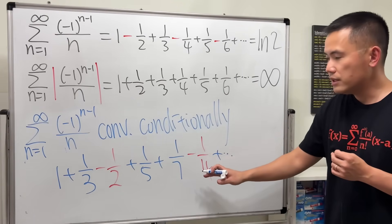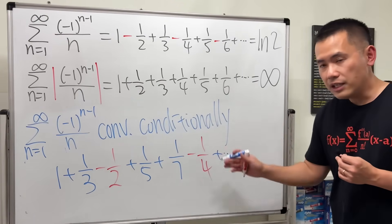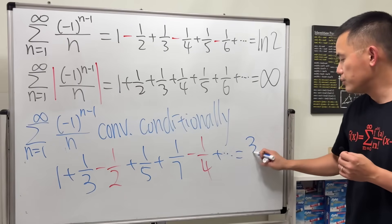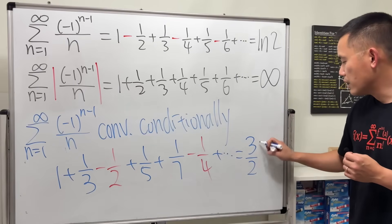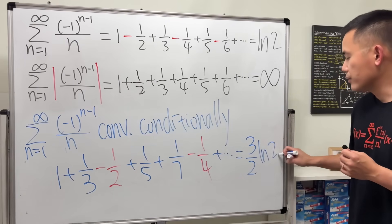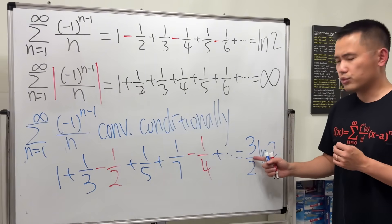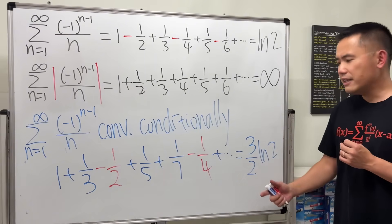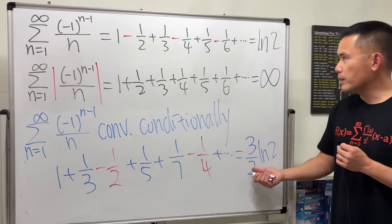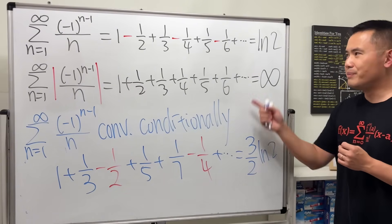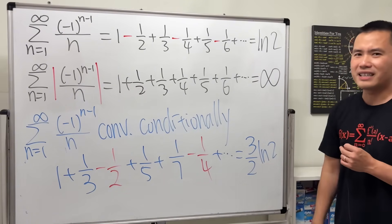If you sum this rearranged series, it actually equals (3/2)ln(2) — you get this extra factor of three-halves. That's 50 percent bigger than the original sum. So how exactly is this possible?